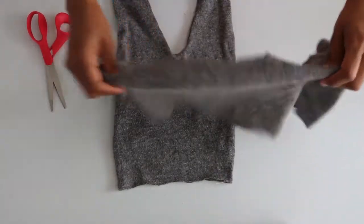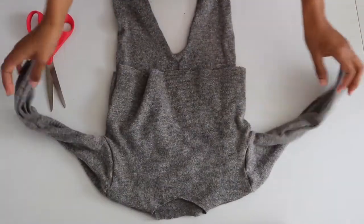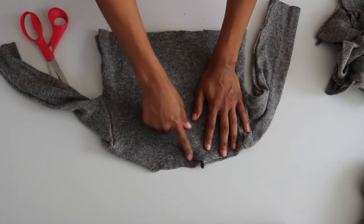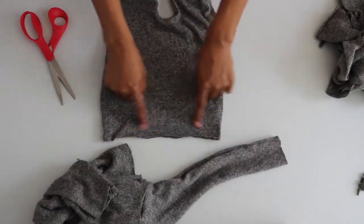I sewed the pant and the sweater off camera and this is how it should look. So now I'm going to make the band for the collar, the waist, and the legs.